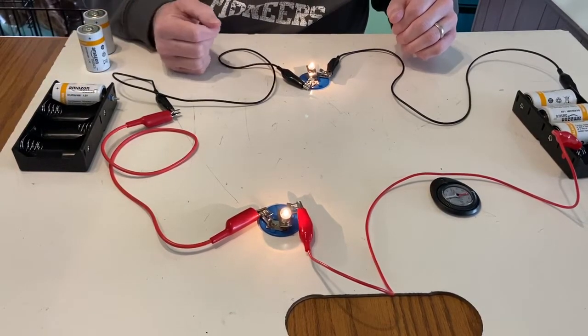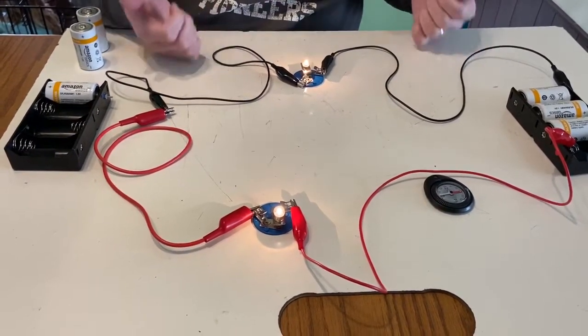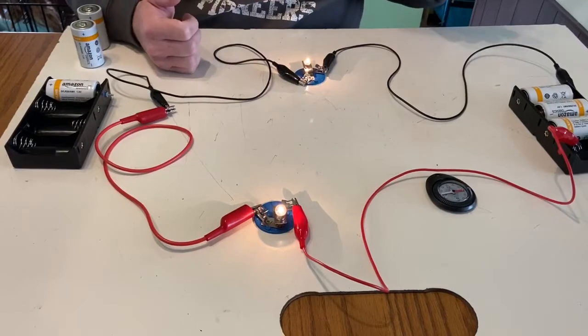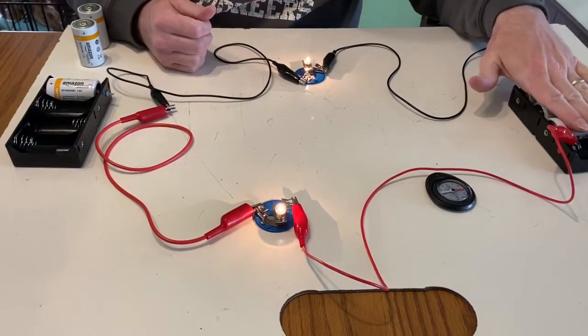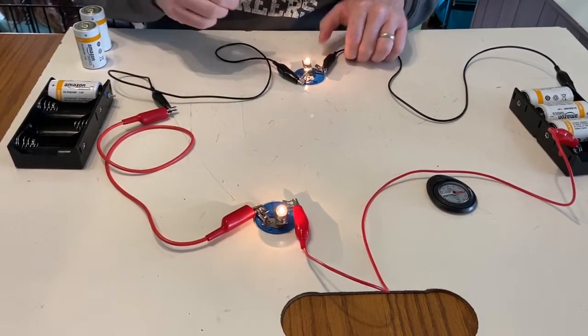And circuit A, unsurprisingly, circuit A is the standard circuit that we've seen over and over and over again. Standard circuit being a three-cell battery with a series of two round bulbs, and it's the same brightness as always.